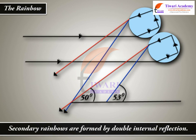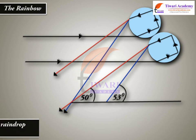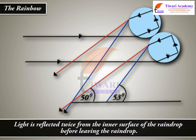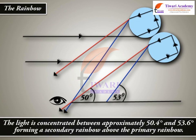Secondary rainbows are formed by double internal reflection. Light is reflected twice from the inner surface of the raindrop before leaving it. The light is concentrated between approximately 50.4 degrees and 53.6 degrees, forming a secondary rainbow above the primary rainbow.